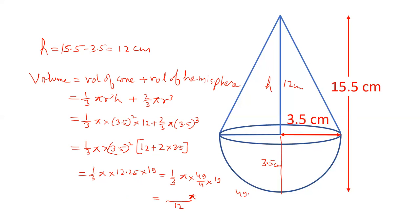49 का 19 के साथ multiply करते हैं। 49 into 19 को 49 into (20 minus 1) लेते हैं — 980 minus 49 equals 931। तो result है 931 by 3।